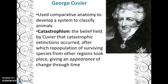Cuvier also believed in an idea called catastrophism — the belief that catastrophic extinctions and catastrophic events cause changes to happen in a population over time. Think about the dinosaur extinction: dinosaurs were there, then a mass extinction event — a catastrophic event — caused those dinosaurs to go extinct. That area eventually repopulated, but after repopulation, those organisms didn't look the same. We have organisms that share some characteristics we believe dinosaurs may have had, but they don't look exactly alike.